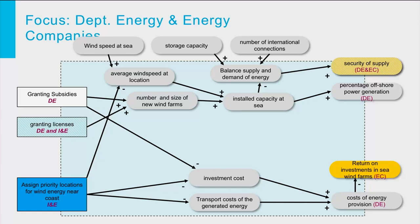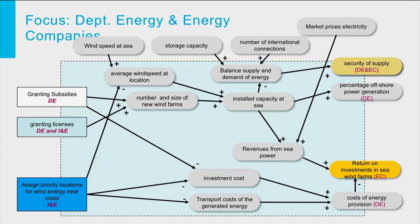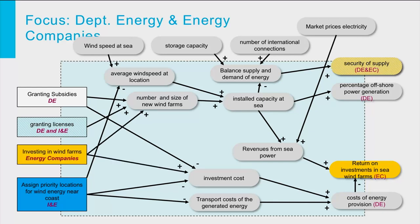Working backwards from the criteria again, return on investment is determined by revenues and costs. Revenues from wind farms, in turn, are determined by installed capacity and by the prices received per kilowatt hour. This signals the need for a new external factor: market prices for electricity depend on the costs of alternative energy sources and are generally outside the control of the actors concerned. Energy companies are prime decision makers regarding the number and size of new wind farms, so we add their investment decisions as a means to the diagram.